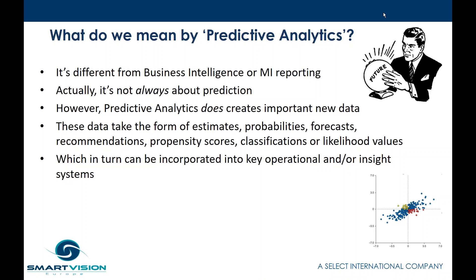We prefer to think about predictive analytics in terms of bullet points. First, it is different from traditional BI or business intelligence or MI management information reporting. Second, ironically, it's not always about prediction — many times we use these capabilities for anomaly detection, segmentation, or sequence analysis, not necessarily predicting things. However, predictive analytics does, in pretty much every application, create new important data that did not exist before — that's one of the things that makes it very different from BI.